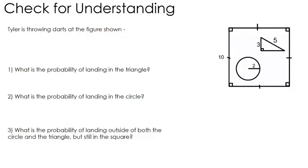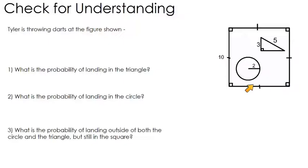Here's a better example. Tyler is throwing darts at this figure — we assume he does land on the dartboard, ruling out the possibility of missing it completely. What's the probability of landing in the triangle? We want the area of our successes, which is the area of the triangle, out of the total area, which is the area of the square. Pause the video and see if you can find both areas.